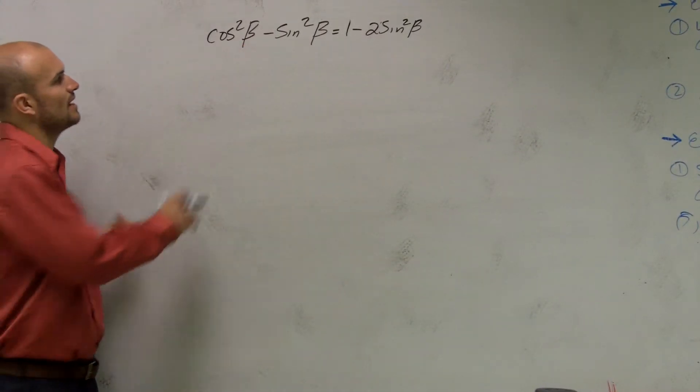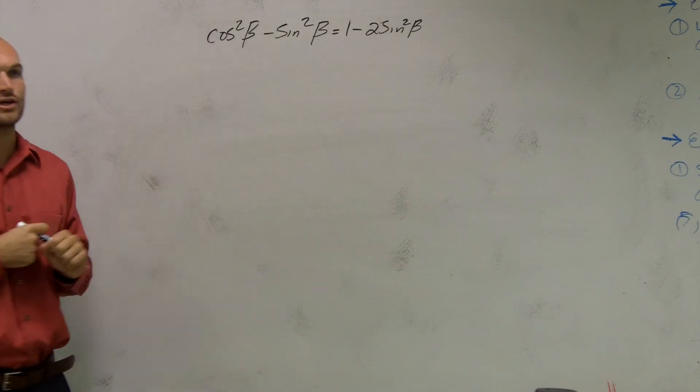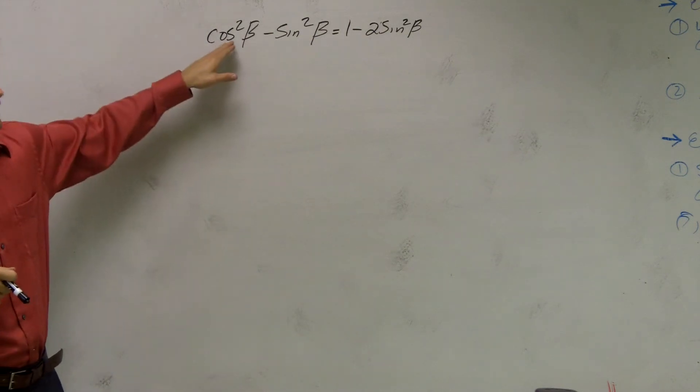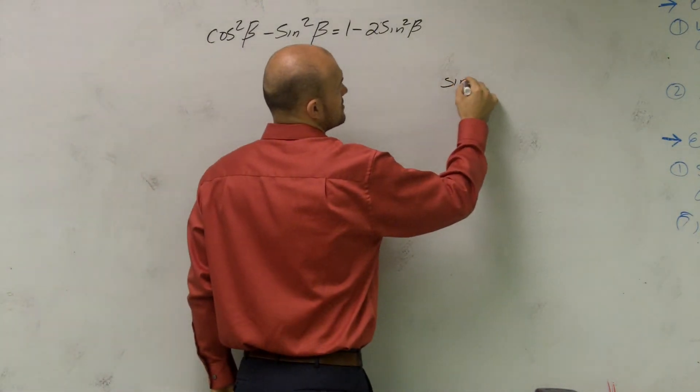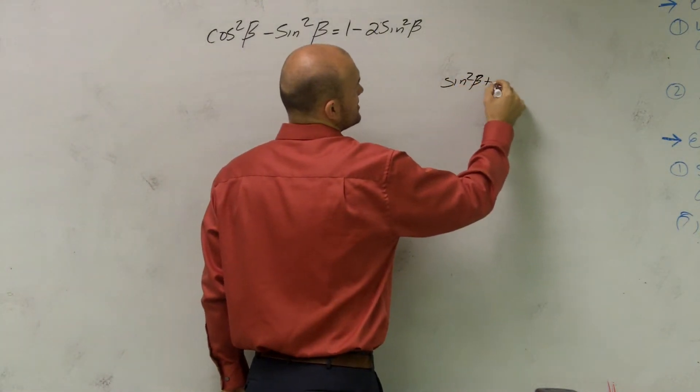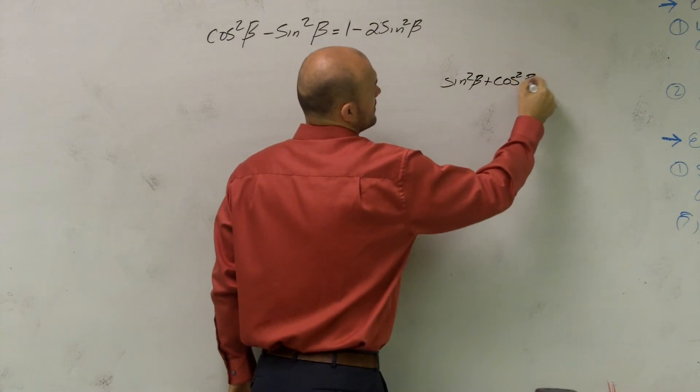So what I need to do is try to get rid of that cosine squared and rewrite it. If I rewrite cosine squared, that's the same thing as if I know that sine squared of beta plus cosine squared of beta equals 1.